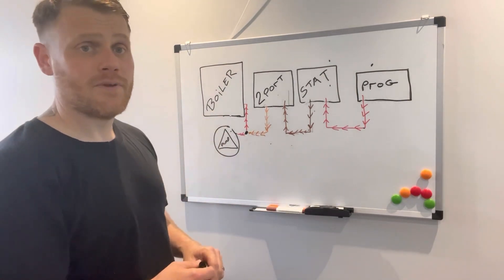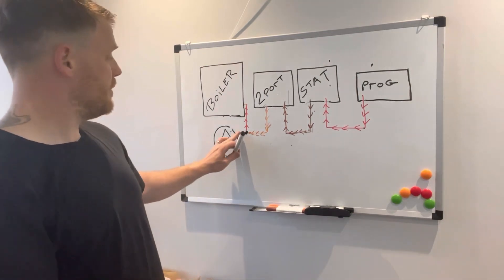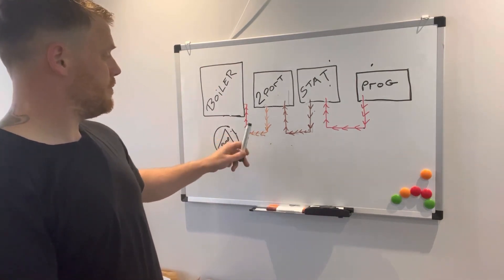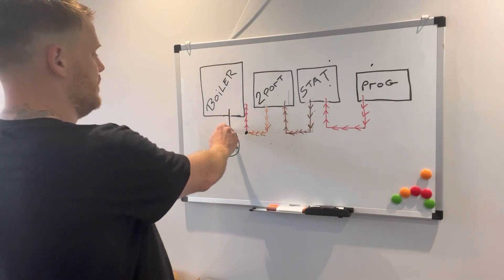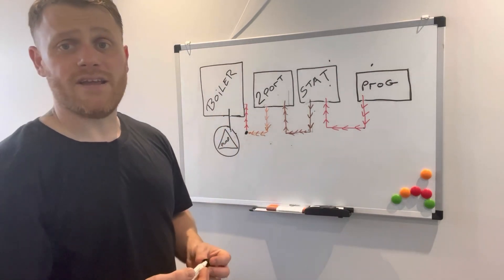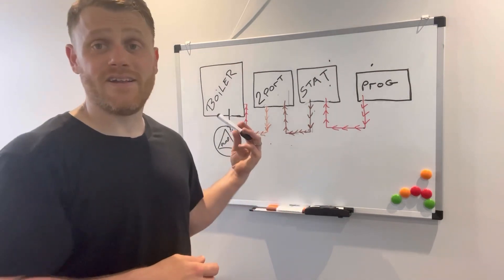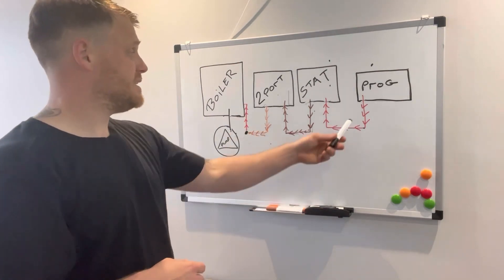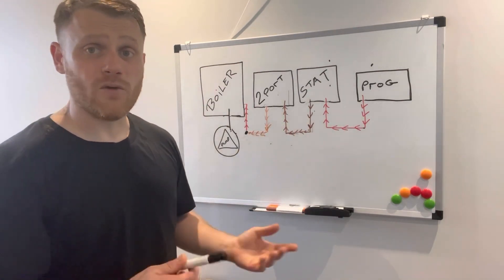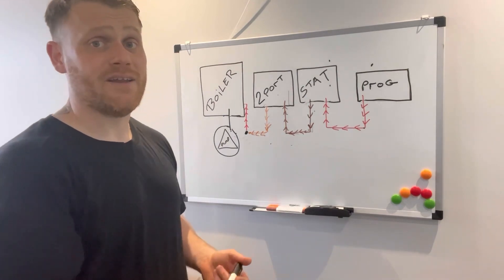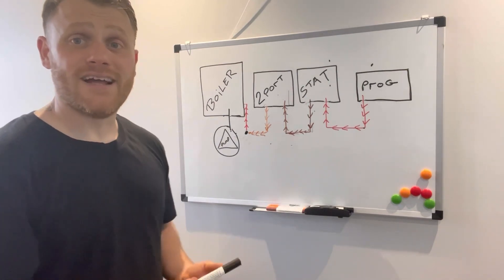Certain setups, Worcester for example, the pump is directly wired into the boiler. That's the only difference I see, so instead of it being there, it should be wired straight into your pump. And that's it, that is how basic S-plan wiring is. It's four or five wires. That's all you've got to remember to wire up an S-plan.